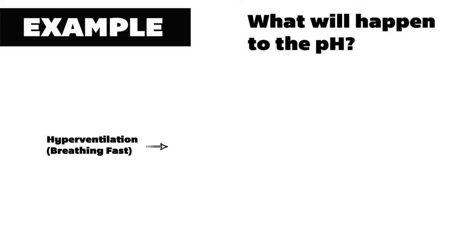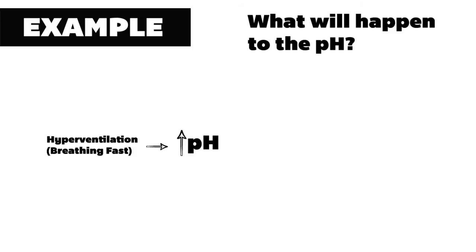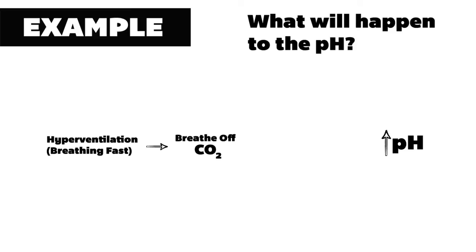For our first example, let's explore the respiratory system. In a person who is hyperventilating, what will happen to this person's pH? This person's pH should increase. The mechanism is that a person who is hyperventilating, or breathing fast, will breathe off more CO2, therefore decreasing the concentration of carbon dioxide in the blood, resulting in an increased pH.